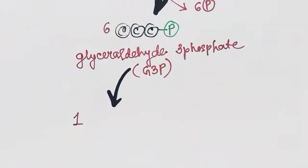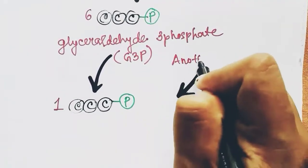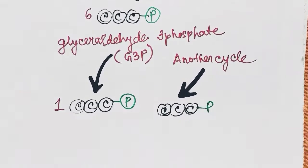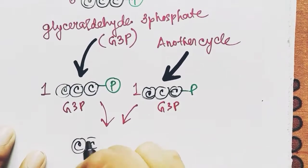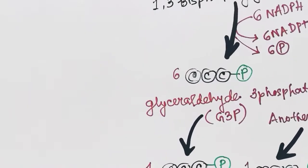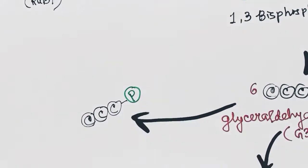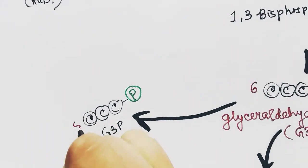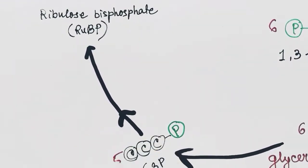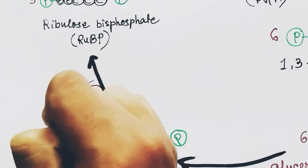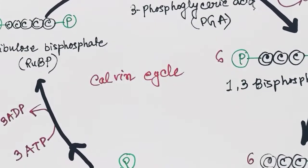Out of six G3Ps, one G3P will combine with another G3P formed by another cycle and will form the six-carbon compound glucose. Now the rest of the G3Ps will contribute to the regeneration of RuBP, taking other steps also and using three ATPs for three RuBP formations. Now the Calvin cycle is complete and photosynthesis is also complete.